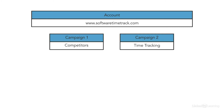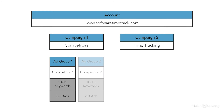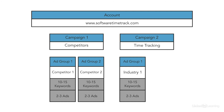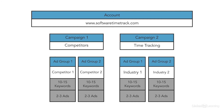You could create an ad group for each competitor. Then set up ad groups for the different industries that the software is useful for under the time tracking campaign. This could be freelancers, restaurant owners, and customer service managers. Freelancers would likely be using different keywords than, say, restaurant owners.